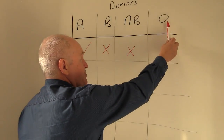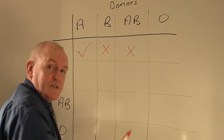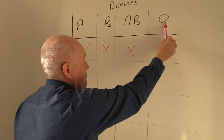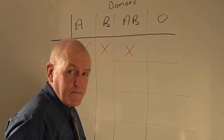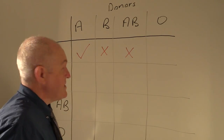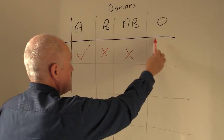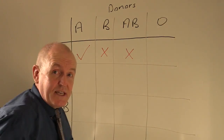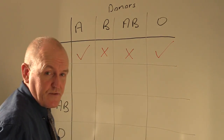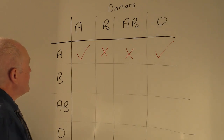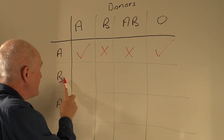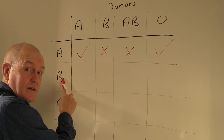Now someone who is blood group O — O is blood group zero — so there are no antigens on the surface of blood group O red cells. And even although there are B antibodies in the group A plasma, that's not a problem because there are no antigens for them to interact with. So theoretically that is a permissible transfusion.